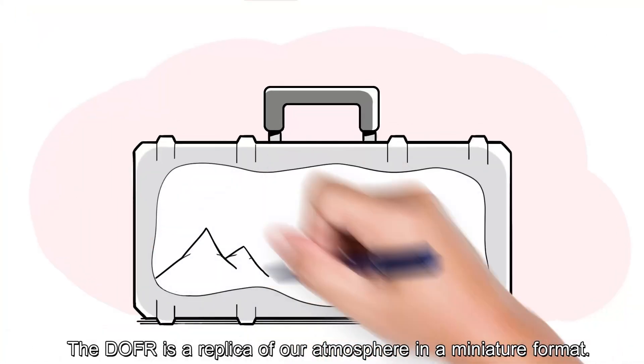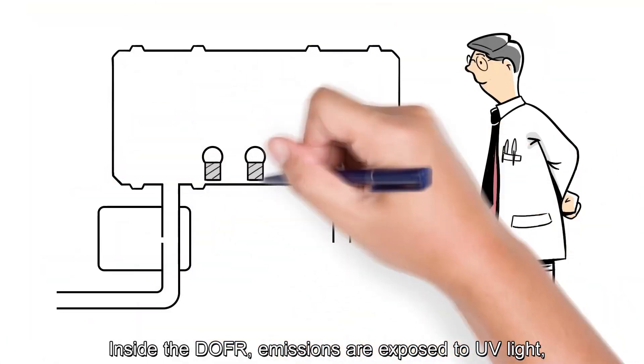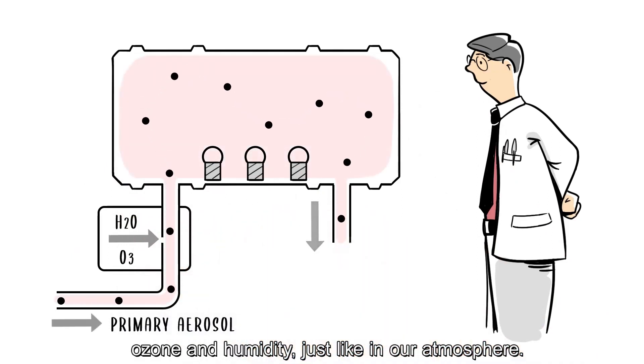The DOFR is a replica of our atmosphere in a miniature format. Inside the DOFR, emissions are exposed to UV light, ozone, and humidity, just like in our atmosphere.